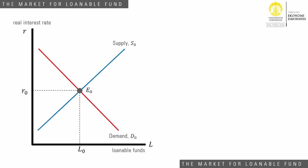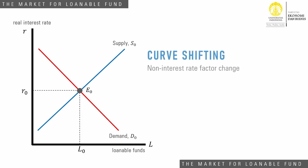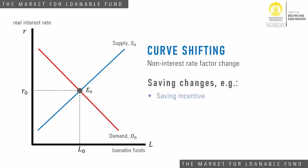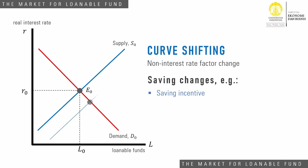Second, the equilibrium position will change if there is a change in supply, demand, or both, due to non-interest-rate factors. Saving is not only affected by the real interest rate. The government may provide tax incentives, for instance, to encourage private savings. In this case, national saving will increase at any given real interest rate, and the supply curve will shift to the right.